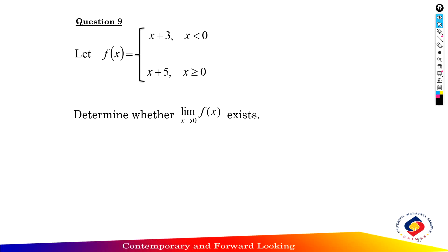Question 9. f(x) equals x plus 3 when x is less than 0, and f(x) equals x plus 5 when x is greater than or equal to 0. Determine the existence of the limit as x approaches 0 of f(x).